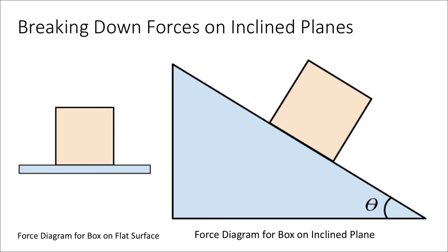Because an inclined plane is really nothing more than a surface at an angle, let's revisit our force diagram for a box resting on a flat surface. I'll skip the interaction diagram as we've drawn these several times before, but I know that there are two forces acting on a box at rest on the ground: the normal force from the surface pointing up and the gravitational force on the box pointing down. We call the normal force the normal force because, relative to the surface, it forms a right angle with the flat surface.